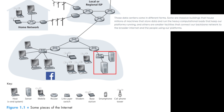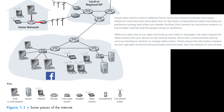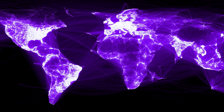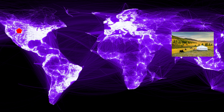Those data centers come in different forms. Some are massive buildings that house millions of machines storing data and running heavy computational loads that keep platforms running. Others are smaller facilities that connect the backbone network to the broader internet and the people using those platforms. When you open one of their apps and load your feed, the app's request for data travels from your device to the nearest facility, which then communicates directly over the backbone network to a larger data center. This describes what's called an edge server — a router at the edge of a private network that is an intermediary between public and private traffic. Large internet companies have many edge locations to accept public traffic and forward requests efficiently on the private network.